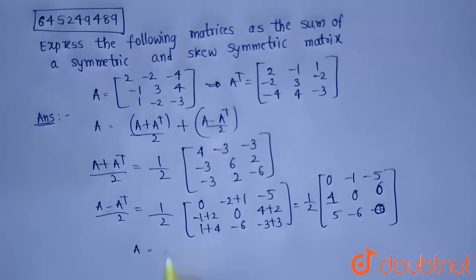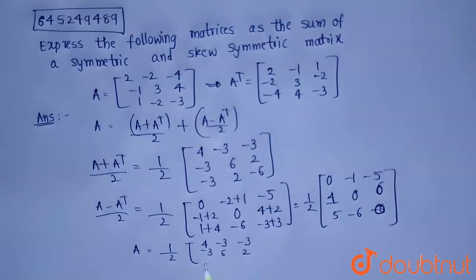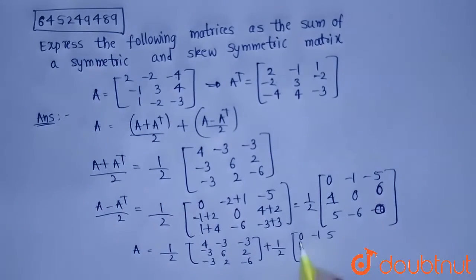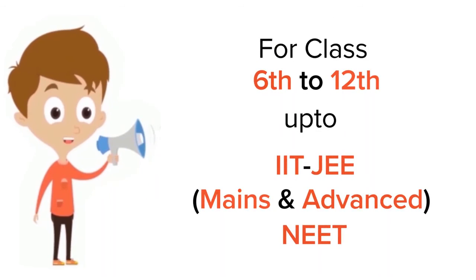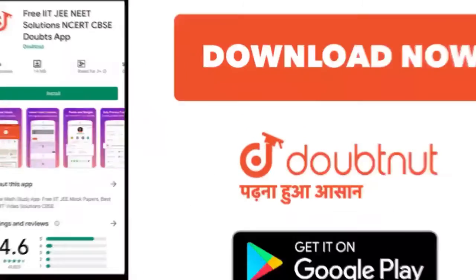Therefore, A can be written as 1/2 × [4, −3, −3; −3, 6, 2; −3, 2, −6] plus 1/2 × [0, −1, 5; 1, 0, 6; 5, −6, 0], where the first is the symmetric part and the second is the skew-symmetric part. For classes 6 to 12, IIT JEE and NEET level — trusted by more than 5 crore students. Download the DoubtNet app today.